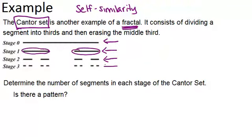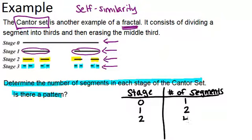In stage 2, we have 4, and those are the ones that are highlighted in yellow. In stage 3, we have 8, and those are all the ones that we've done so far.